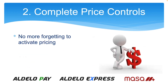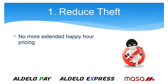Number two is complete price control. You'll never have to worry about forgetting to activate a price — the system will do it automatically, eliminating the worry about whether you did it right or on time. It also eliminates buddy prices, where employees might give the happy hour discount when it's not supposed to be happy hour. They are no longer allowed to extend happy hour pricing to their friends, family, and others, and there's no more forgetting to upcharge for entertainment hour. That's why the number one reason you need the Adelo Express Advanced Pricing Module is that it reduces theft.